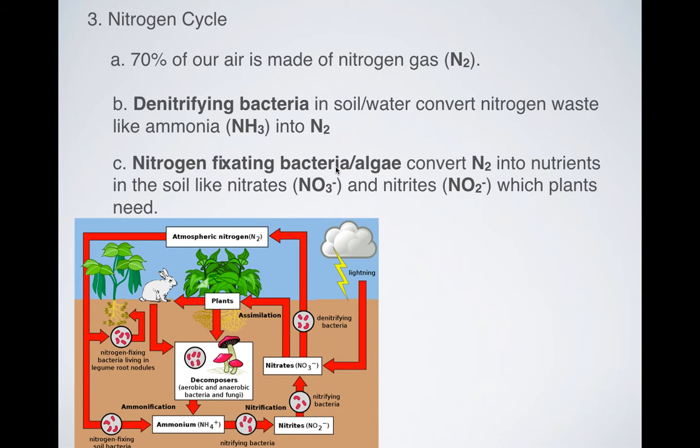Now, nitrogen fixating bacteria and algae will convert that nitrogen gas in our atmosphere into nutrients in the soil like nitrates and nitrites. Now again, nitrate has this symbol, nitrite has that symbol. Don't worry about the negative signs. Instead, just focus on the elements. So we've got nitrogen and three oxygens. Here we have one nitrogen and two oxygens.